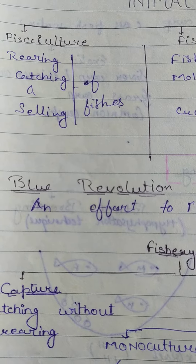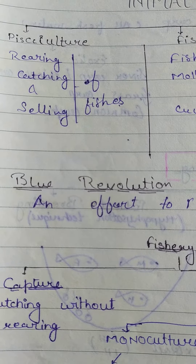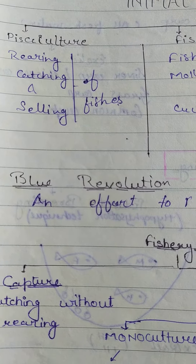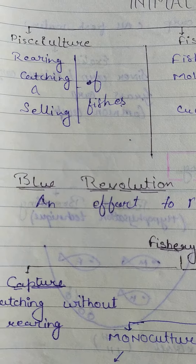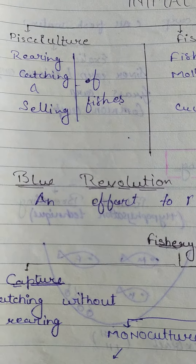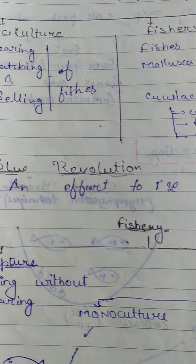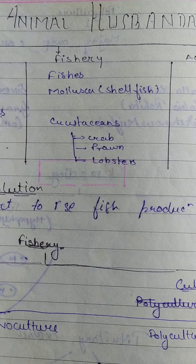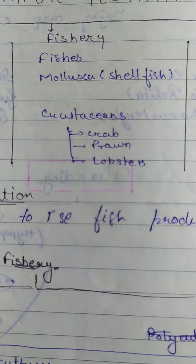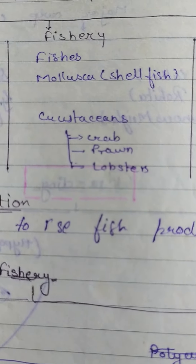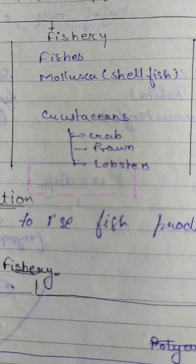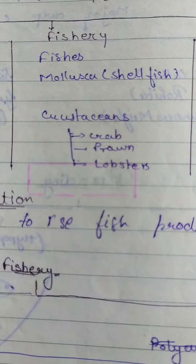First is fishery culture — rearing up fishes, catching up fishes, and selling fishes. Fishery includes fishes, mollusca, shellfish, crab, prawn, and lobsters.